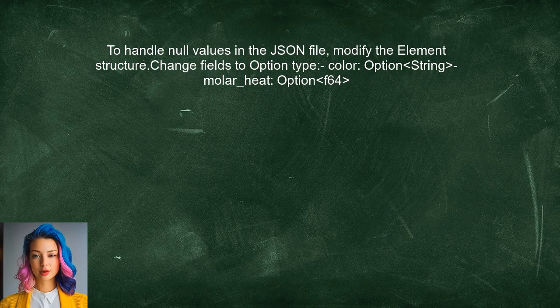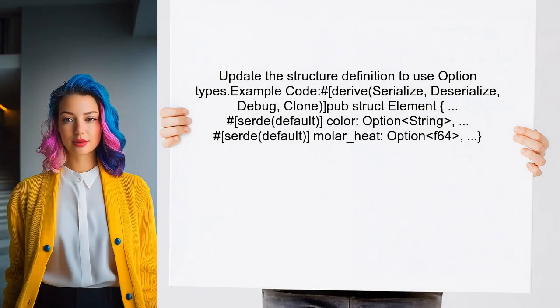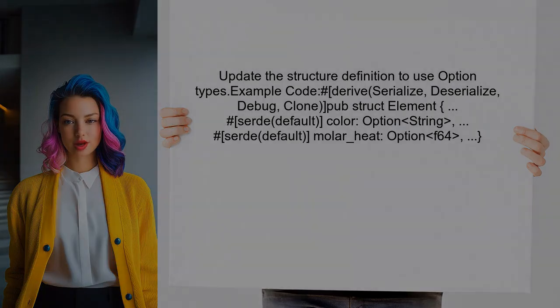To handle null values in the JSON file, the user can modify the structure of the element. Specifically, they should change the type of the fields that may contain null values to an Option type. Next, the user should update the structure definition. This allows Serde to interpret null values as None, which is a valid state for Option types.